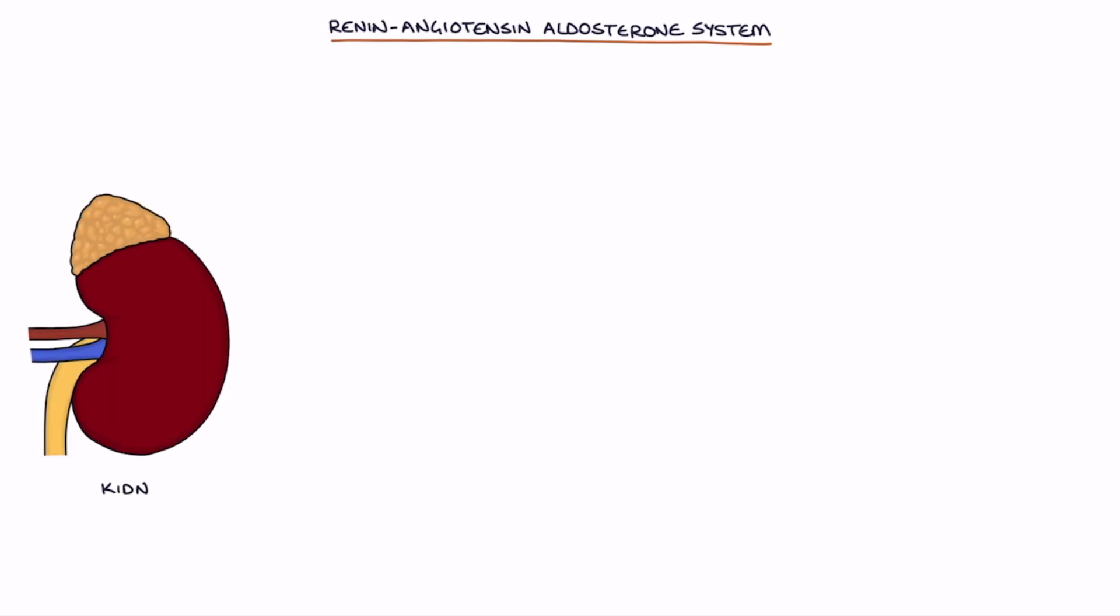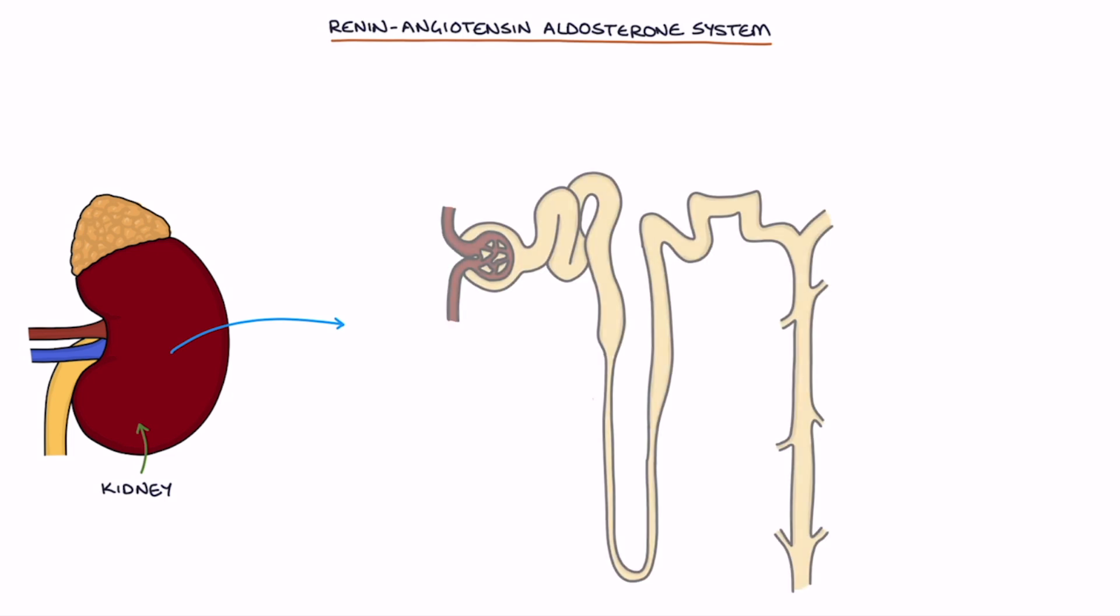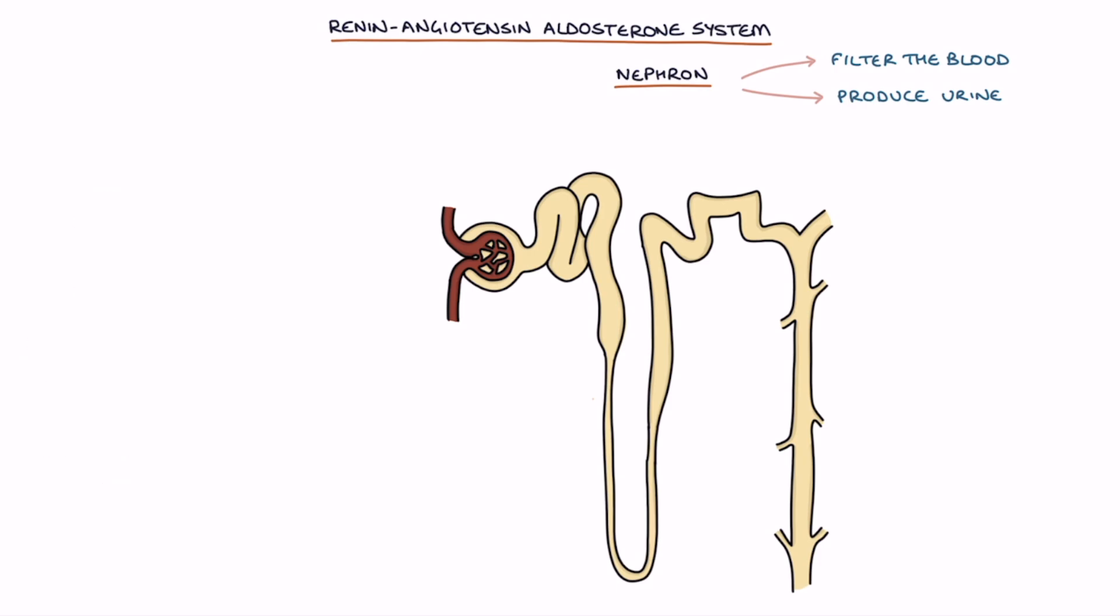Inside the kidneys, many tiny structures called nephrons filter the blood and produce urine. The basic structure of the nephron from start to finish is the glomerulus, proximal tubule, loop of Henle, distal tubule, and collecting duct.